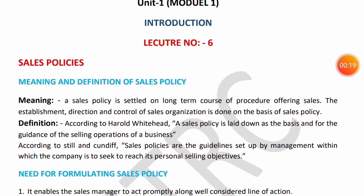First of all, we will discuss the meaning and definition of a sales policy. Before understanding sales policy, we have to understand what is the meaning of policy. Basically, there are three terms: Objectives, Strategies, and Policies. Objectives are the end results desired by an organization or an individual. To achieve those objectives, the tools and techniques used are called Strategies. And to implement those strategies, the guidelines that are made - on the basis of which decisions are taken - are called Policies.